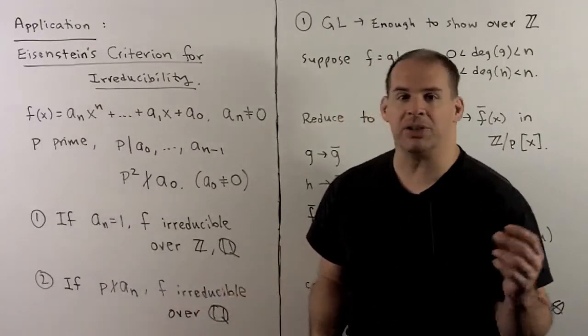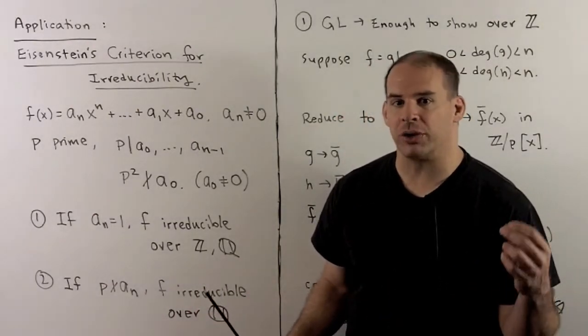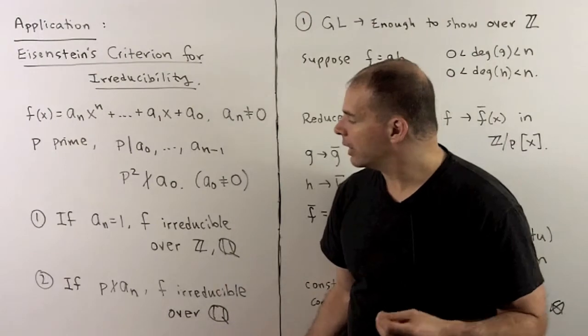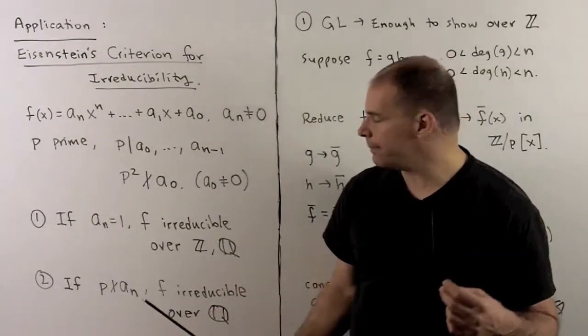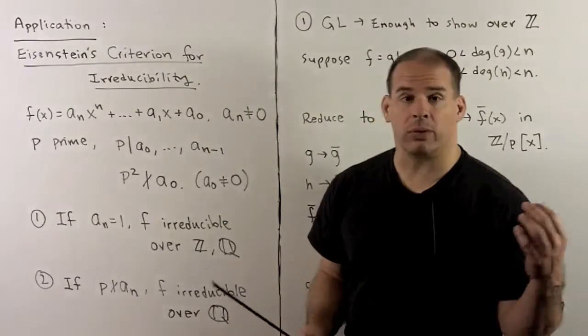Two things can happen. If we have a_n equals 1, f is irreducible over the integers and the rationals. Two, if p does not divide a_n, f is irreducible over the rationals.